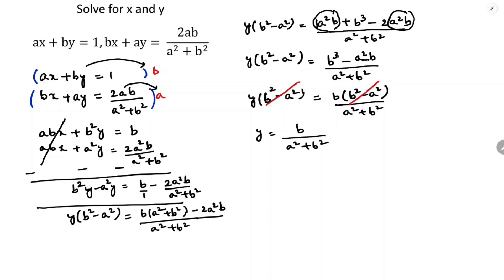Now this is the value of y. The y value is b by a square plus b square. I will substitute this y value in one of the equations to get the value of x.